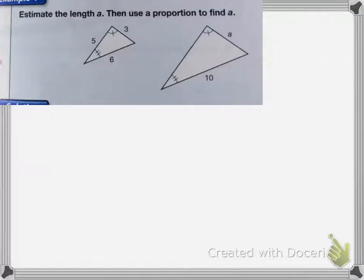On this one it wants us to estimate the length of A and then use the proportion to find A. These tick marks show that these angles are the same because they have the same number of tick marks. We know that the sum of the interior angles equals 180 degrees, and we know that the unmarked angles would have to be congruent because the other two angles are as well, which means that the lengths of the sides have to be proportional.